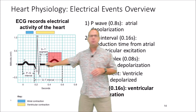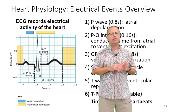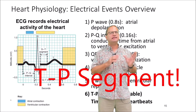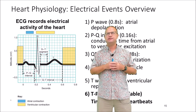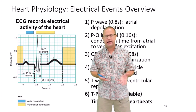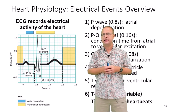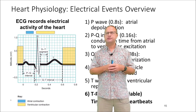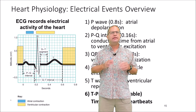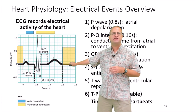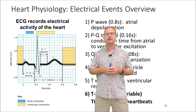Somewhere around here we're also having repolarization of the atria. Last but not least, let's talk about something called the TP interval. This is the time between the end of one T wave and the beginning of the next P wave, and this is variable — it depends on the heart rate. If somebody is relaxed, we can expect a heart rate of somewhere between 60 and 80 beats per minute and a longer TP interval. If they are running cross-country, we can expect 120 to 150 beats per minute and a very small TP interval.